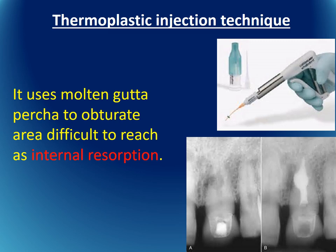The thermoplastic injection technique uses an injection device to soften gutta-percha and introduce it directly into the root canal. This technique is especially important in cases of internal resorption, where it is next to impossible to obturate such irregular areas with any other technique.